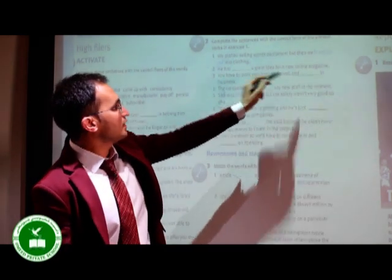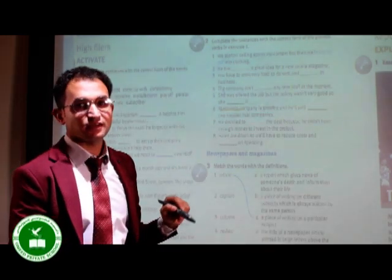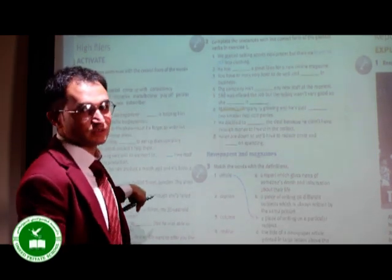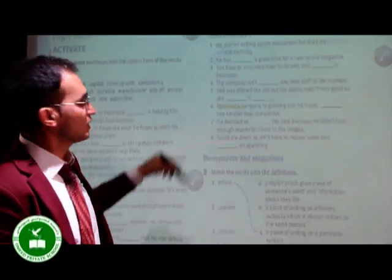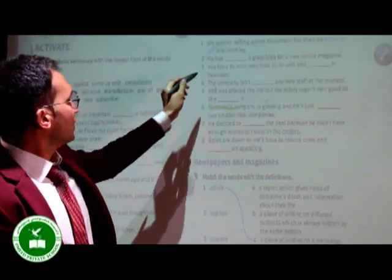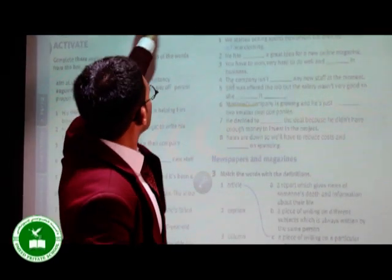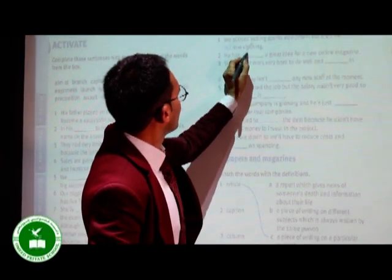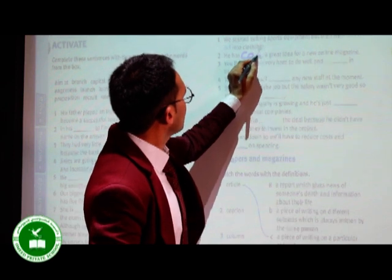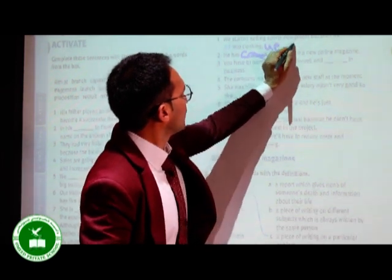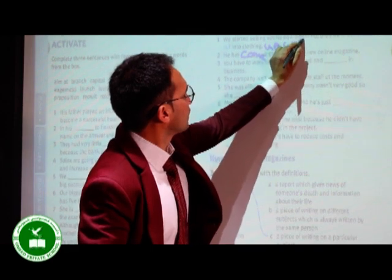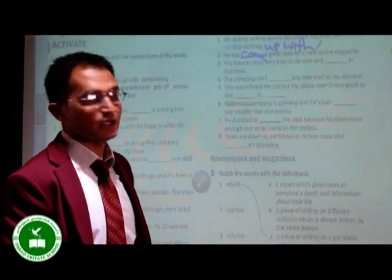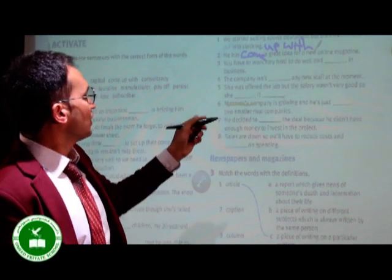Number one is done for us as example. Number two. He has a great idea for a new online magazine. He has what? In here, in previous exercise, we have started some phrasal verbs. We should use one of them. We should use one of them. He has what? He has come up with.